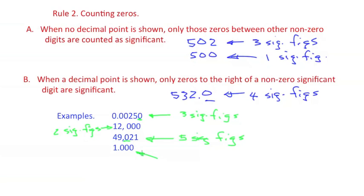In this last example, I have a decimal place. So anything to the right of a significant figure, which is the one. So we have zero, zero, zero. All of these zeros are to the right of a non-zero significant figure. So I have four significant figures here.